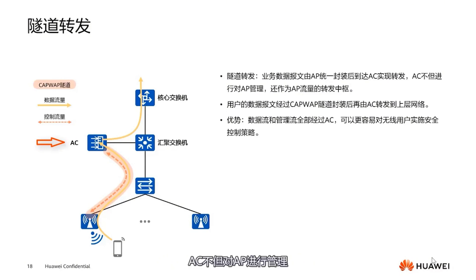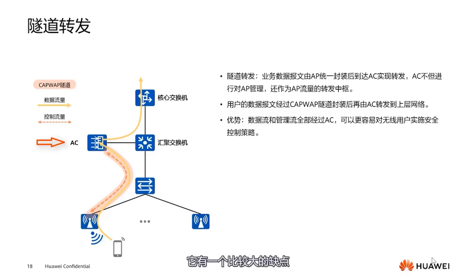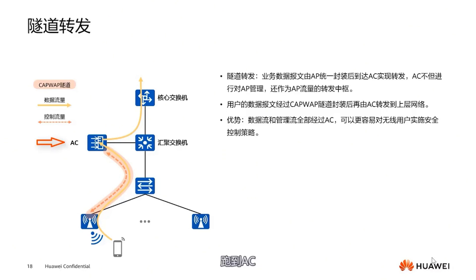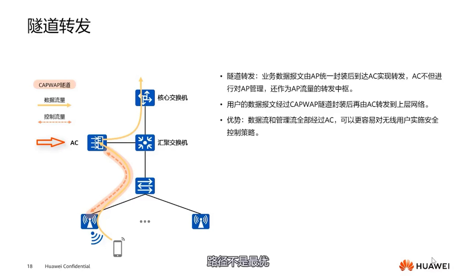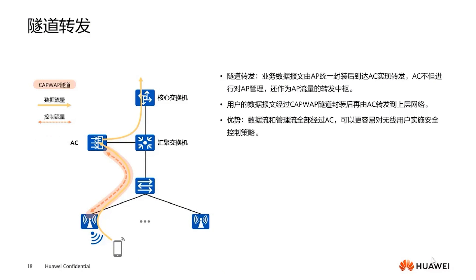The AC not only manages the AP but also acts as the traffic hub for the APs. It has a significant downside: the data travels through a convergence switch to the AC and then upwards, so the traffic takes an extra loop, making the path suboptimal. But this makes it easier to implement security control policies for wireless users.